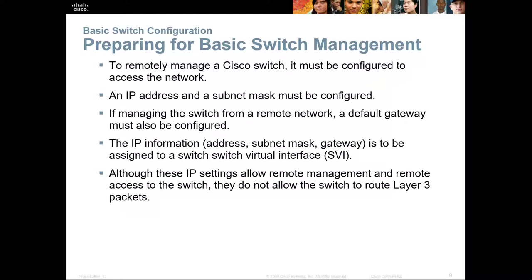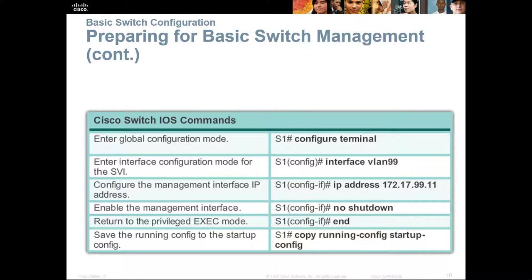For basic switch management — how can we remotely manage a Cisco switch? We have to set it up so it can connect to the network. If managing the switch from a remote network, you also need to set a default gateway and configure a virtual IP, or switched virtual interface (SVI). We do that by moving from user exec mode to global configuration mode, then navigating to the appropriate VLAN interface. VLAN 1 is the default interface.